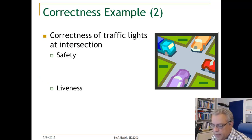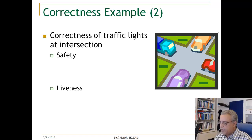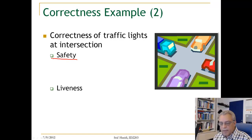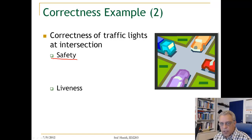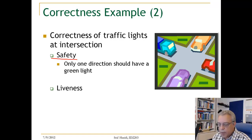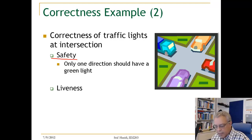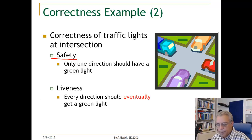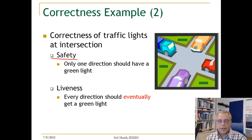Here is another informal example: the correctness of a traffic light at an intersection. The safety property here states that in this cross intersection, the two lights should never both be green — only one direction should have the green light. Whereas the liveness property would say that eventually every direction should get a green light.